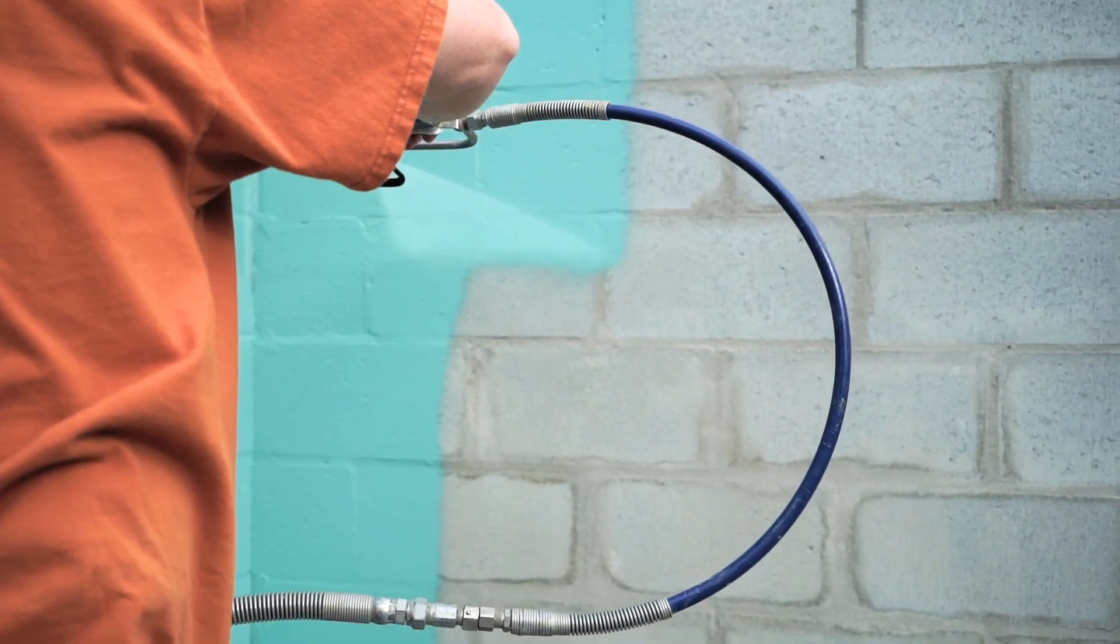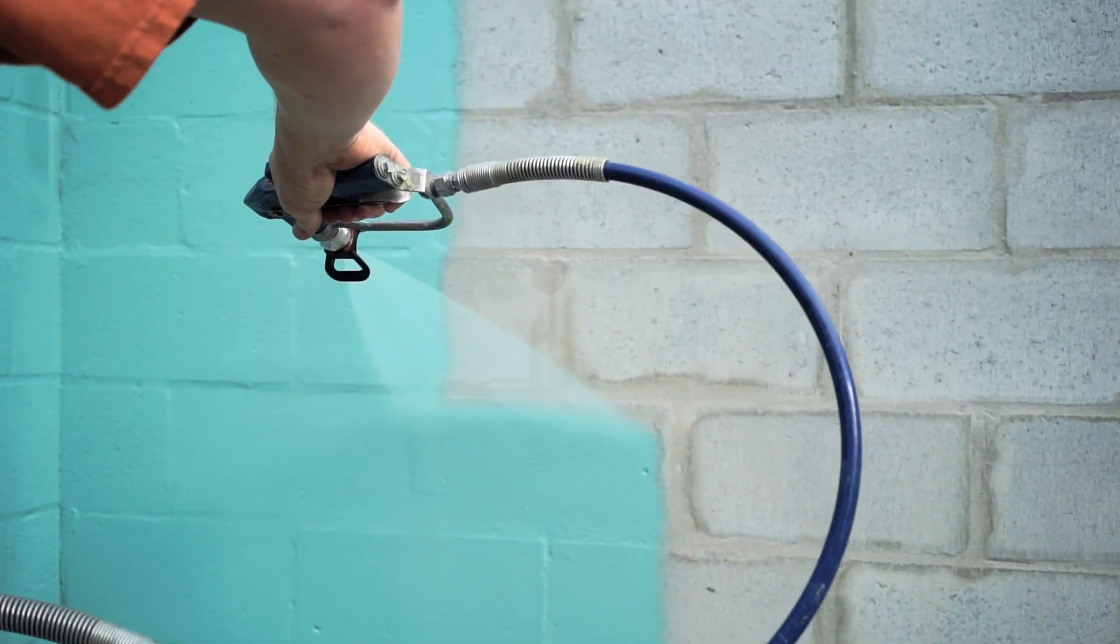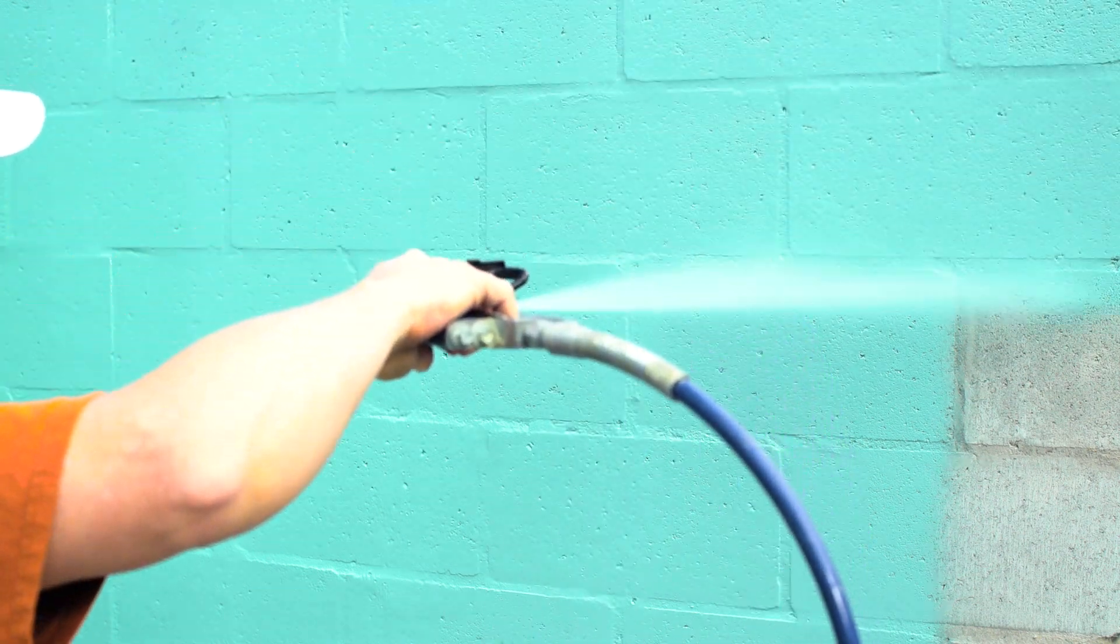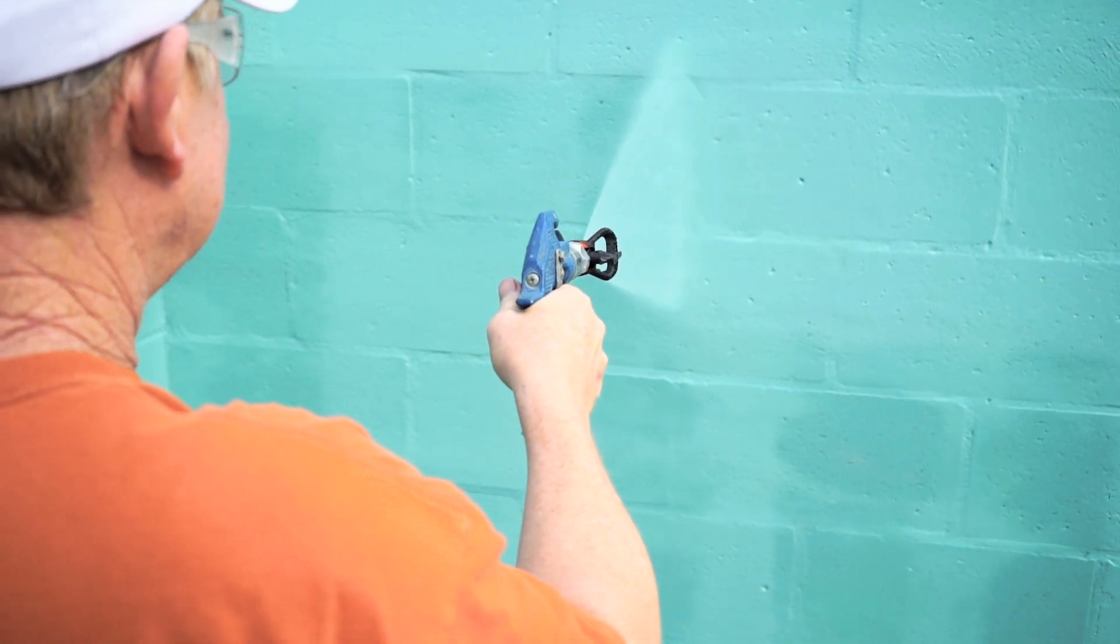For spray application, use an airless spray pump that can support a 25 mil tip at 3,000 psi. Spray uniformly using vertical and horizontal sweeping motions for a continuous void and pinhole-free surface.